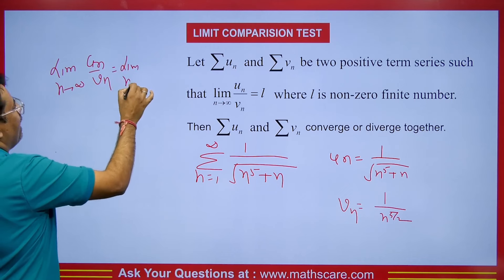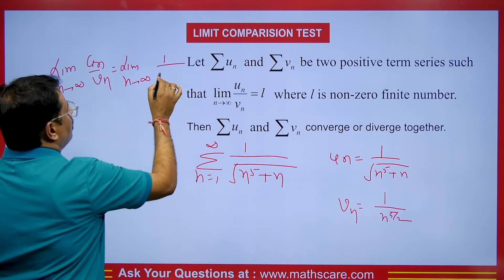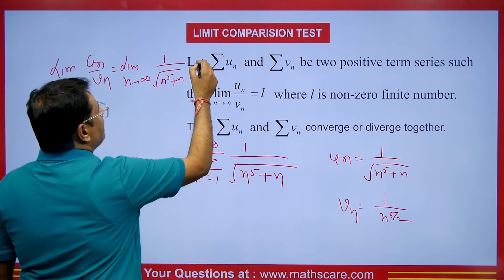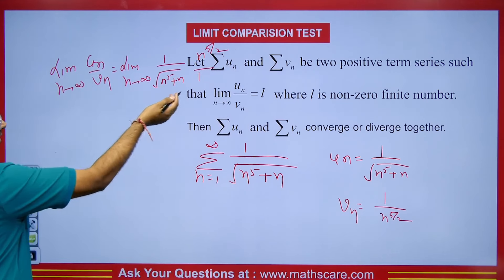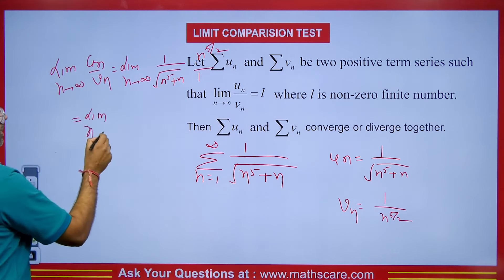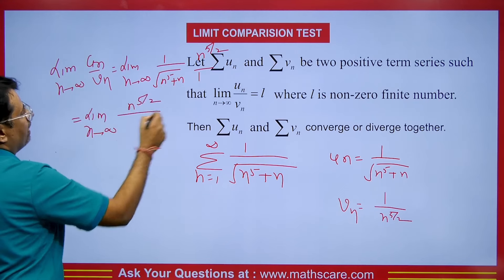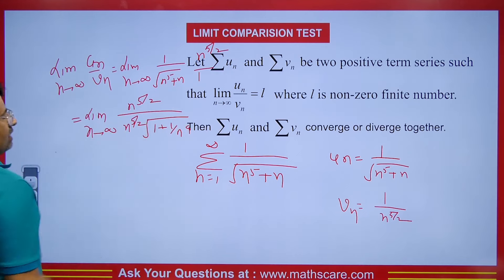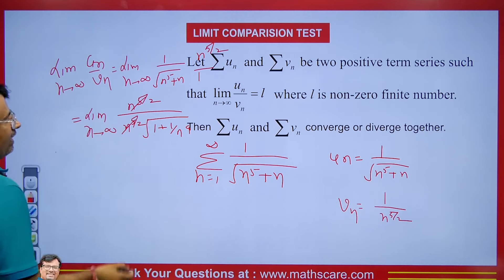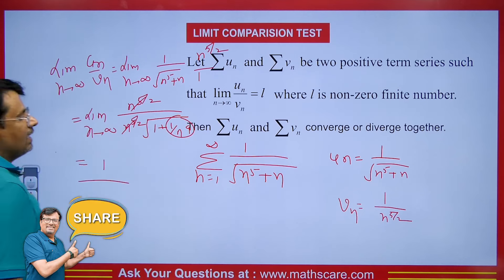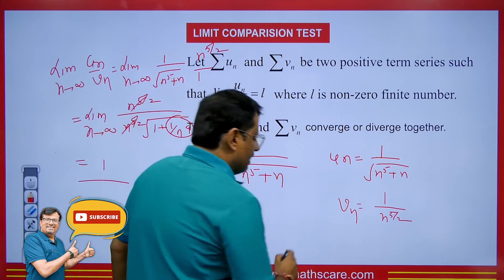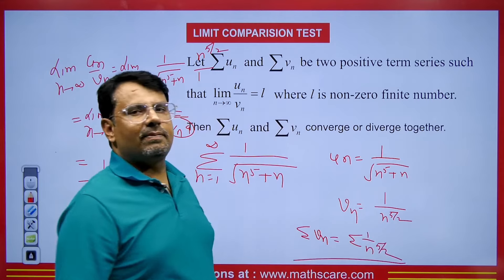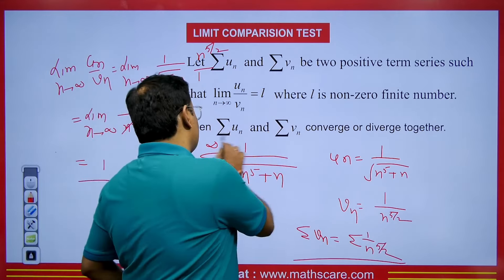We calculate the limit n tends to infinity of un upon vn. un is 1 upon root of n to the power 5 plus n, divided by vn which is 1 upon n to the power 5 by 2. Upon dividing, n power 5 by 2 comes to the numerator. Taking n to the power 5 as common inside the root gives n power 5 by 2 times root of 1 plus 1 by n to the power 4. The n power 5 by 2 terms cancel, and as n tends to infinity the value becomes 1. Since summation of 1 upon n to the power 5 by 2 is convergent by p-series, this series will also be convergent.